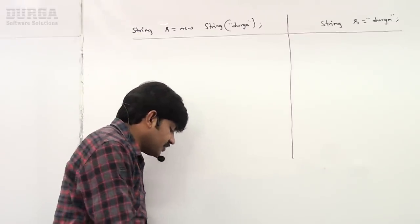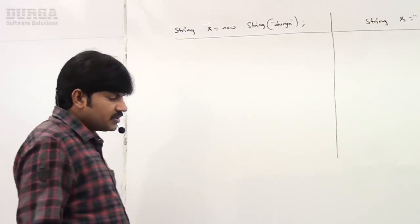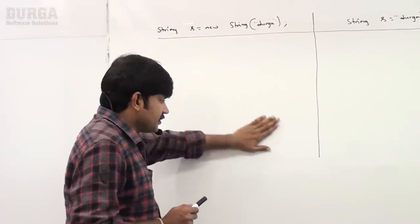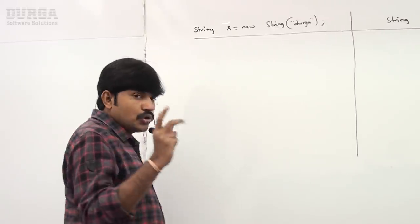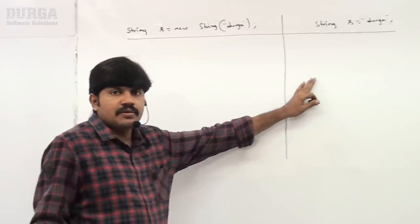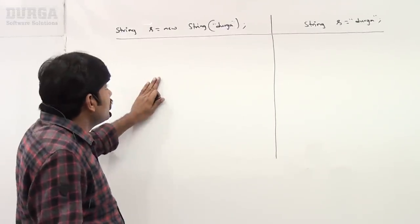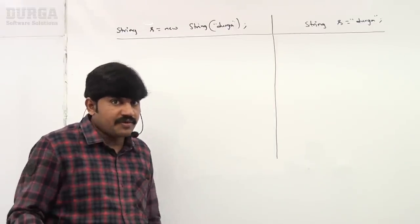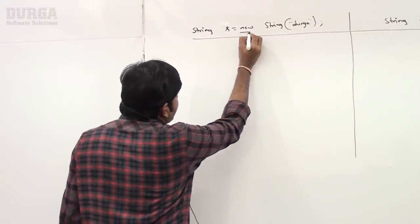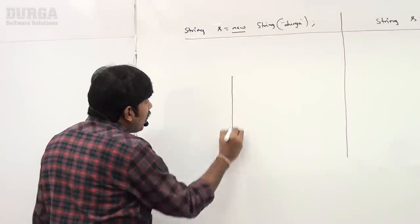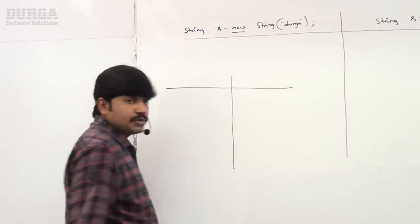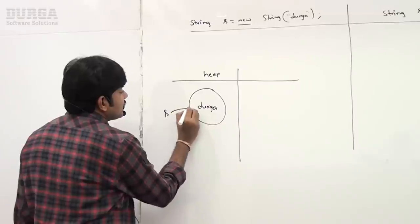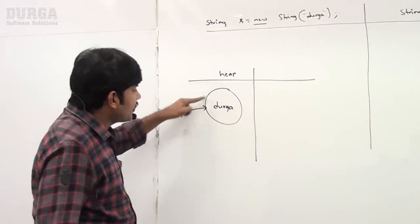Remember that in the first case — `String s = new String("durga")` — two objects will be created, but in the second case only one object will be created. Whenever we use the new operator, compulsory a new object will be created in the heap area with the content "durga", and the reference variable `s` points to that heap object.